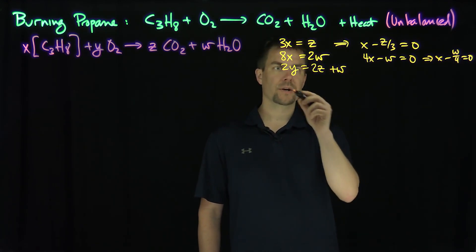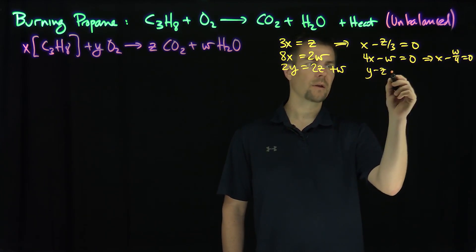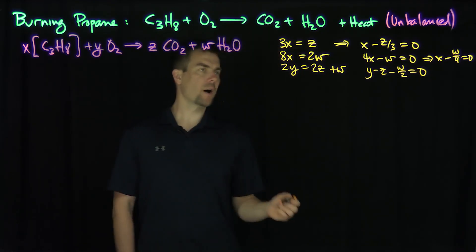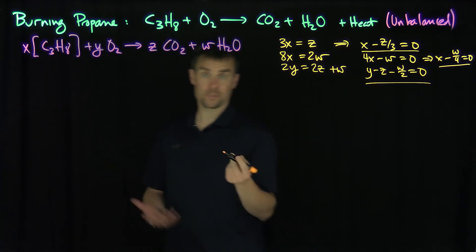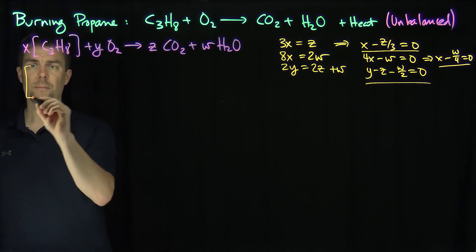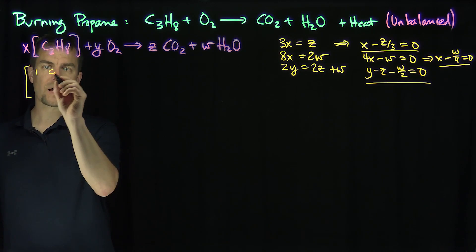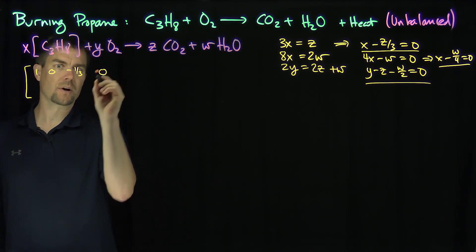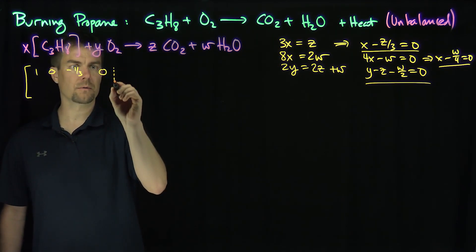The oxygen equation tells me that Y minus Z minus W over 2 equals 0. So now I have a system of three equations and four unknowns, meaning I'm going to have one free variable. Let's put down the augmented matrix. The first row looks like: 1 for X, no Y term, negative one-third for Z, then augmented with 0, and 0 for W augmented with 0.